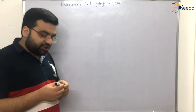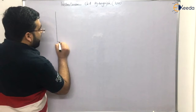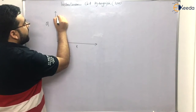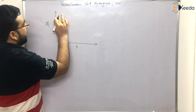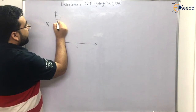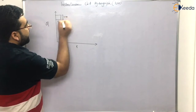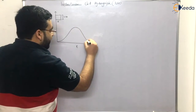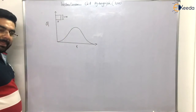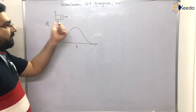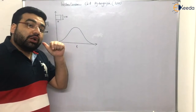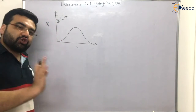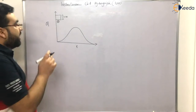Let me first draw a normal unit hydrograph. This is discharge on the y-axis, this is time on the x-axis. This is for a duration D_r. It starts at time zero, it is of D_r duration, and one unit — one centimeter — is the rainfall depth. This is the hydrograph. Now, the shape of this hydrograph also depends upon the duration of rainfall D.